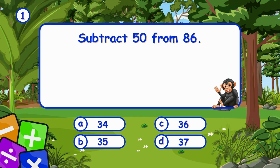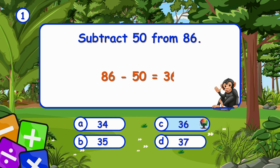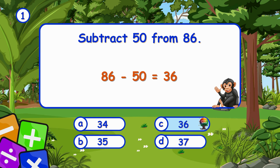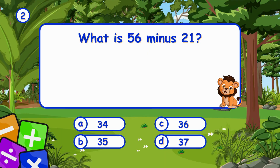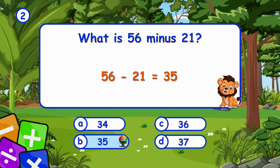Subtract 50 from 86. Subtracting 50 from 86 leaves 36. What is 56 minus 21? It's B, 35. Subtracting 21 from 56 leaves 35.